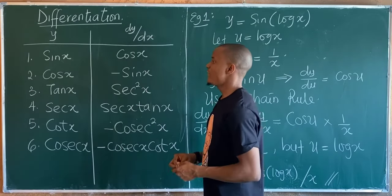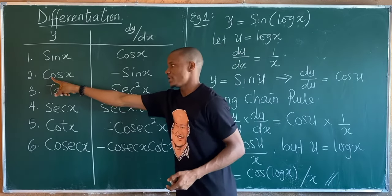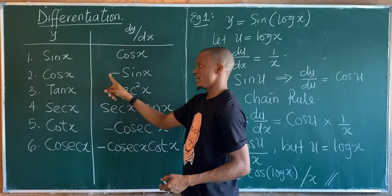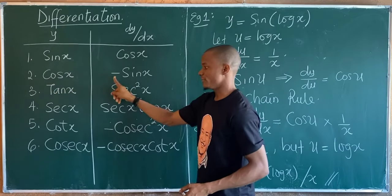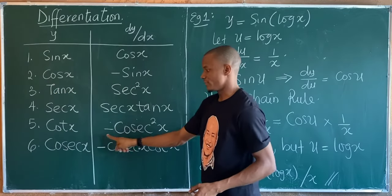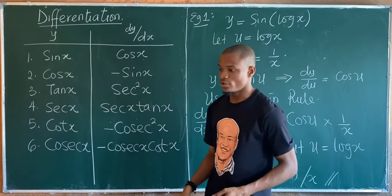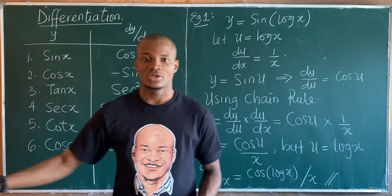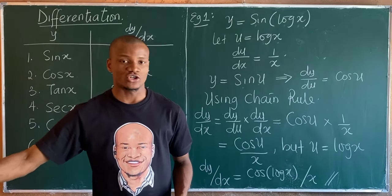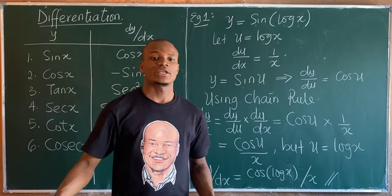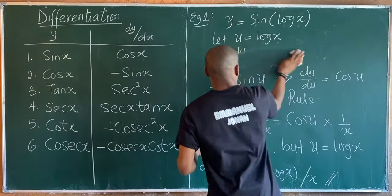Let me point out something: when it comes to differentiating trigonometric functions, whenever I differentiate a trig function that starts with 'c' — cos, cot, cosec — I get a negative result. It's something you should note: whenever you differentiate a trig function starting with 'c', it usually gives you a negative result.